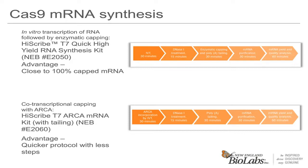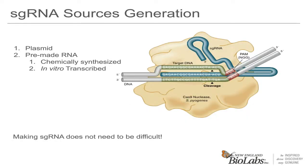Now we are going to move on to generating sgRNAs. In addition to using plasmids for sgRNA introduction, we want to highlight the use of pre-made sgRNA that can be complexed with Cas9 to make RNPs — the method that will result in highest editing efficiency. There are two main sources of sgRNA: chemically synthesized RNA oligos and in vitro transcribed sgRNAs. Chemically synthesized RNA oligos can be quite costly and can take extra time for delivery.